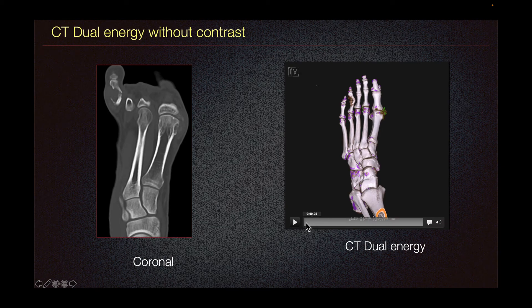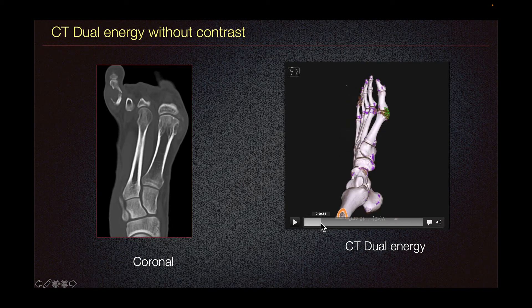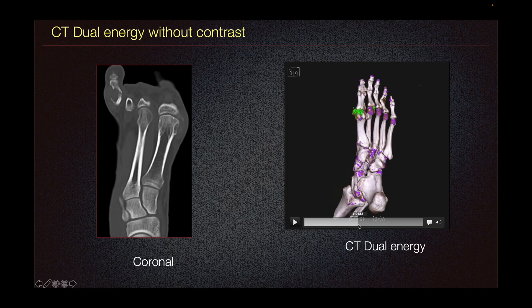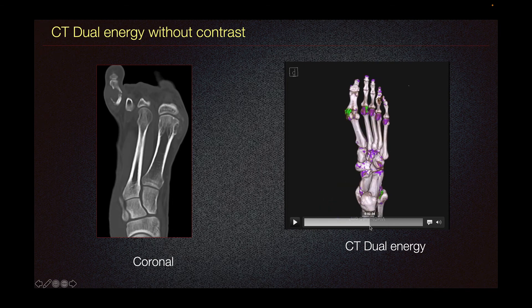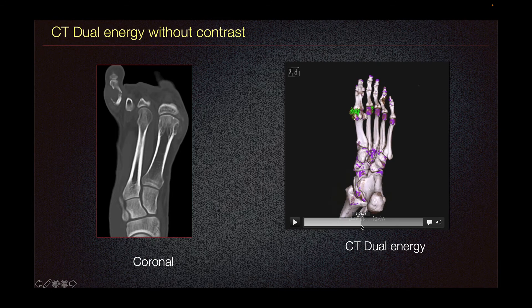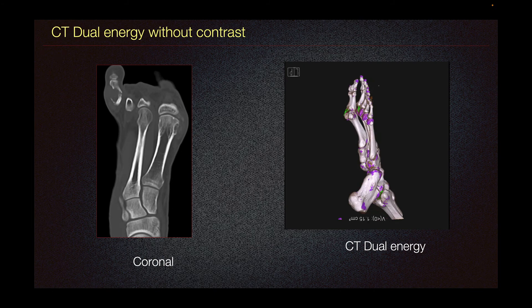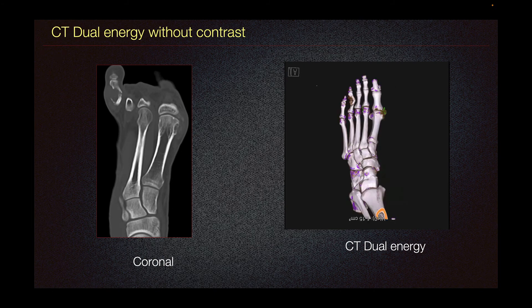This is our CT dual energy 3D reconstruction. We can see multiple green deposits predominantly involving the first MTP joint, the second MTP joint, and to a lesser degree in the fourth PIP joint. A small deposit on the distal fibula is also seen, consistent with uric acid deposits.